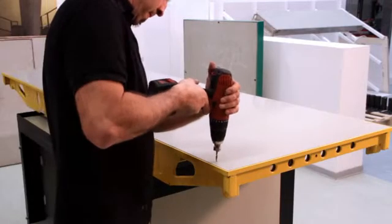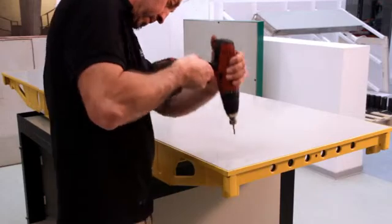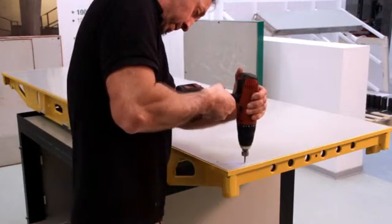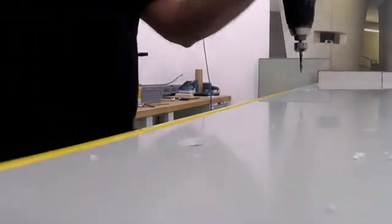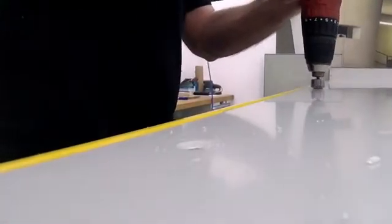Holes are then drilled into the AUKUS panel and the formwork for riveting. To ensure the rivet is flush with the AUKUS, it's countersunk using a 120 degree countersink.